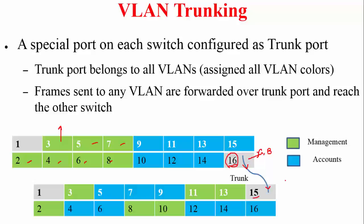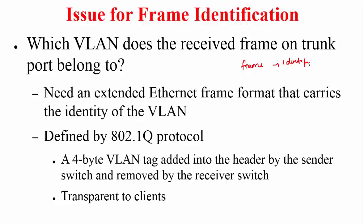When a frame arrives on the trunk port, how does the receiving switch know whether to forward it to the green group or the blue group? The solution is that the frame must identify the VLAN it belongs to. This is defined by the 802.1Q protocol: a 4-byte VLAN tag is added to the frame header by the sending switch. The receiving switch reads the tag and removes it before forwarding to the appropriate ports, making this process transparent to the end clients.